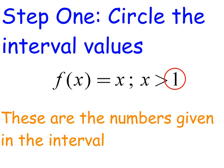Let's follow these steps to get the right answer. Step 1 is to circle the interval values. So I'm going to circle that number that's part of my interval that's to the right of the semicolon. These are the numbers given in the interval. Step 1 is complete. We've circled that number.